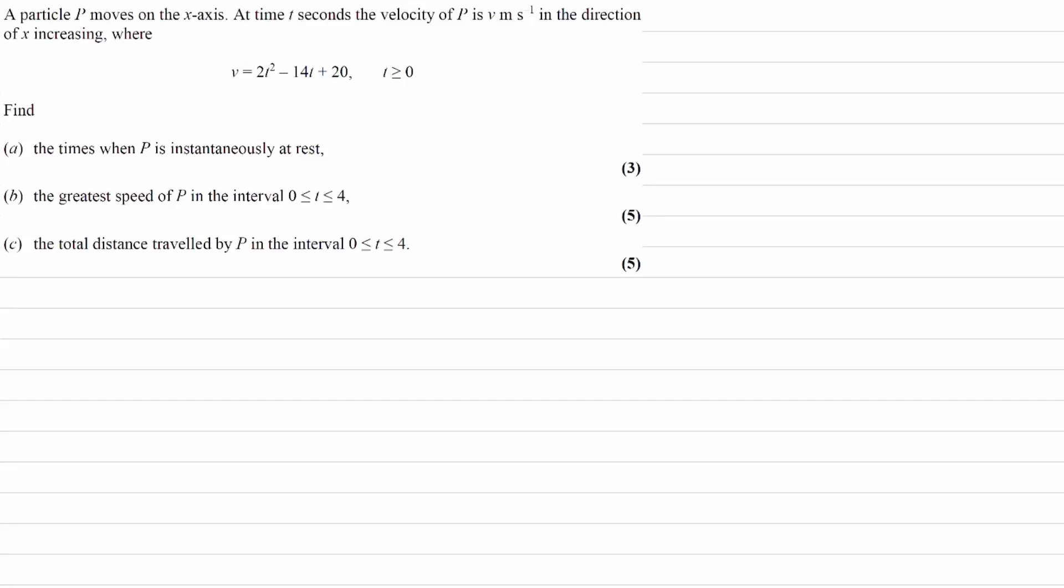So for this question, part A is straightforward, part B and C is where it starts to get tricky. A particle P moves on the x-axis. At time t seconds, the velocity of P is v in the direction of x increasing, where v is equal to 2t² - 14t + 20.